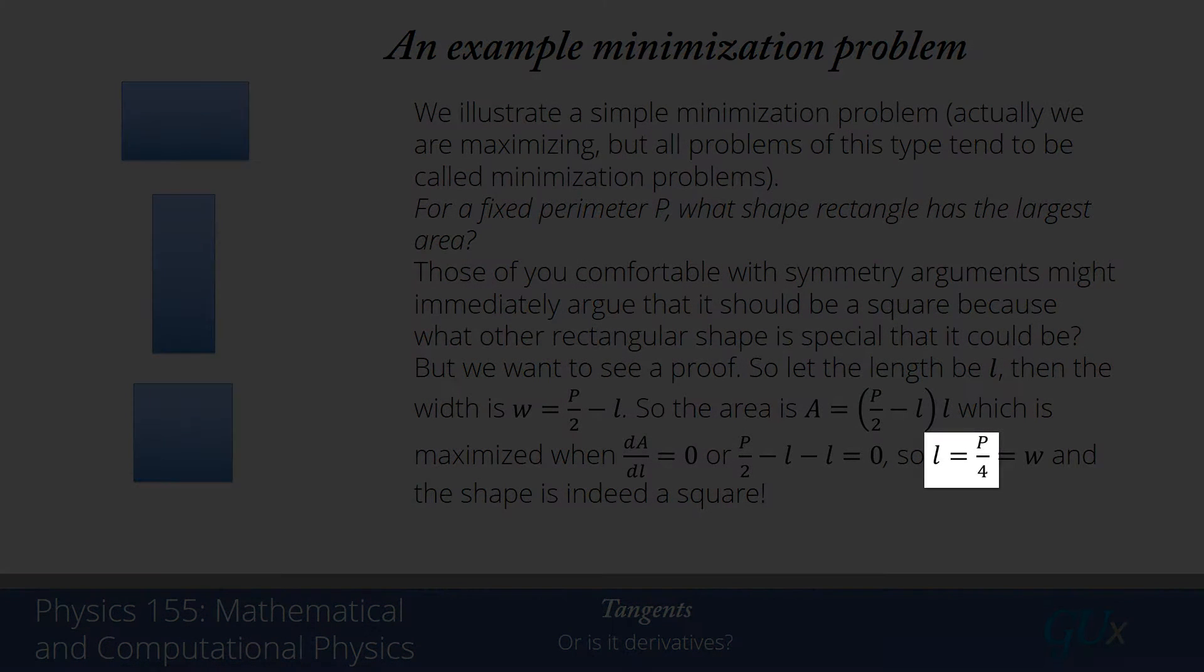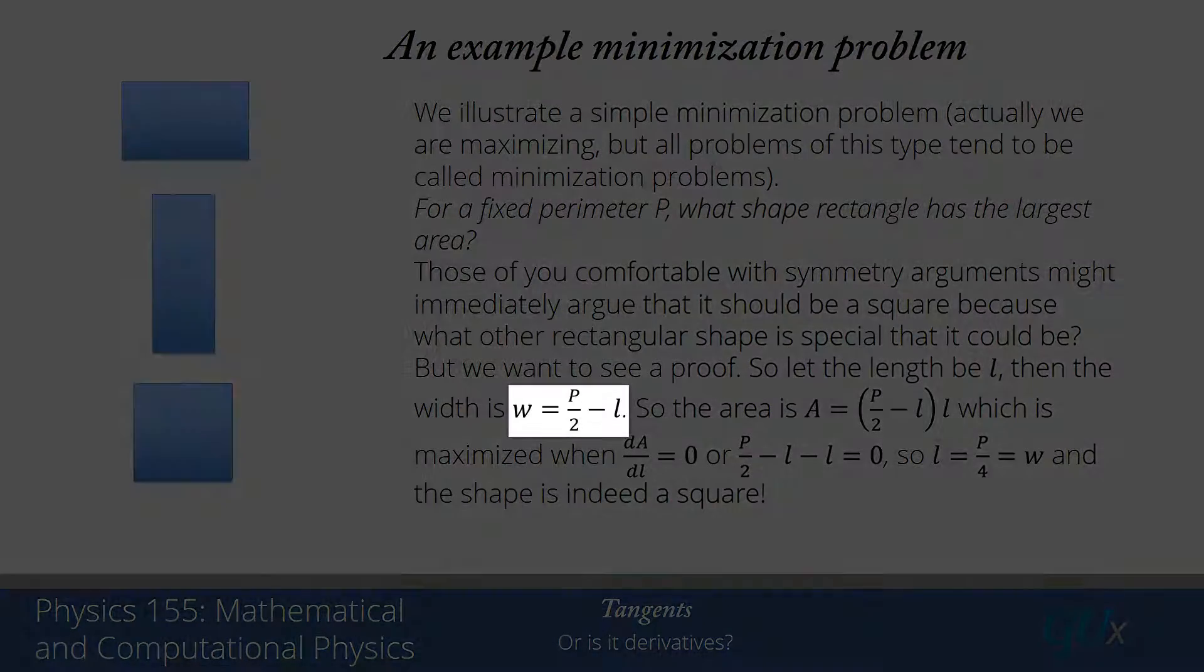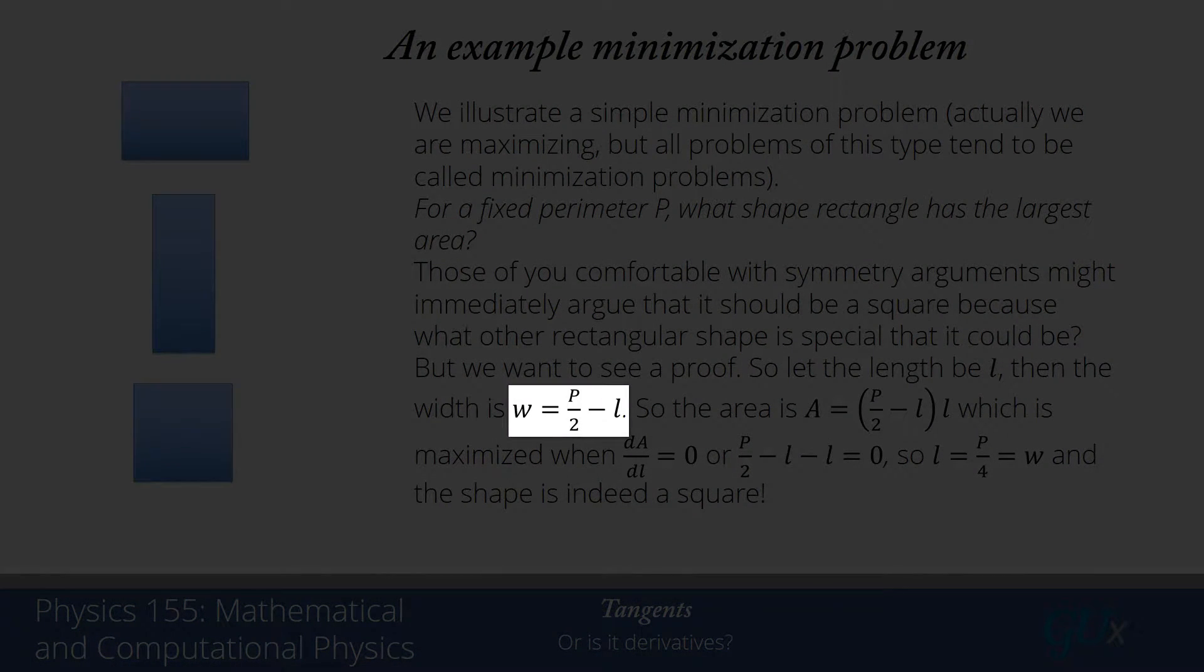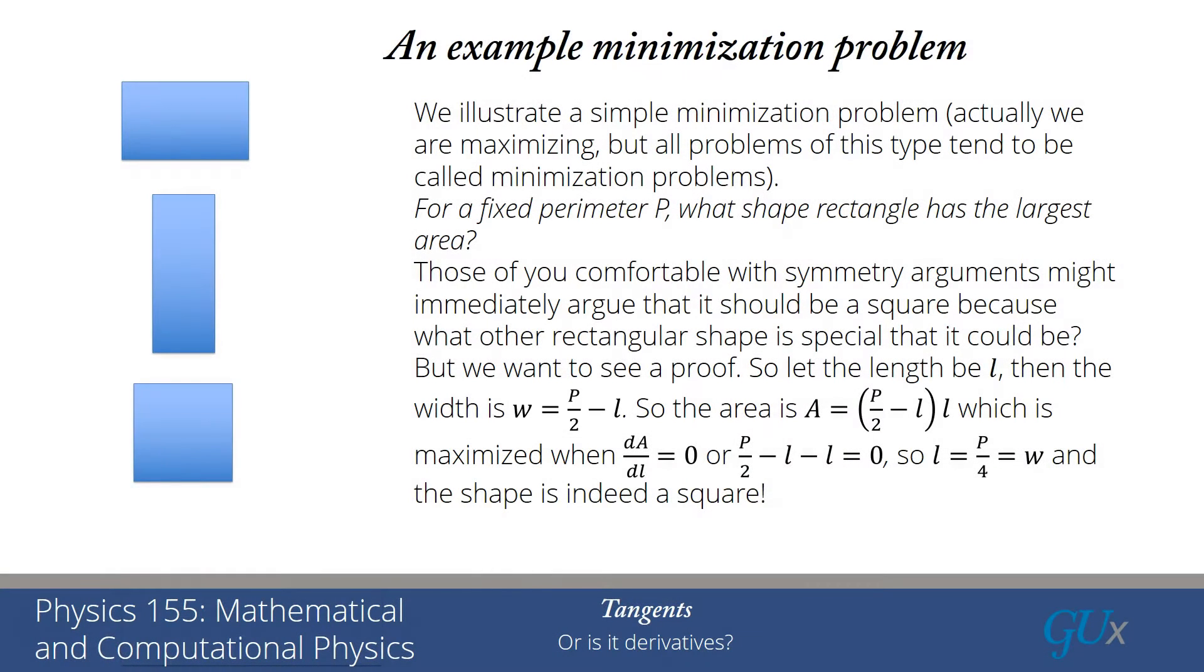Or solving that, I will find l is equal to p over 4. And if I take l equals p over 4 and substitute back into the formula for w, I find w is equal to p over 2 minus p over 4, which also is equal to p over 4.